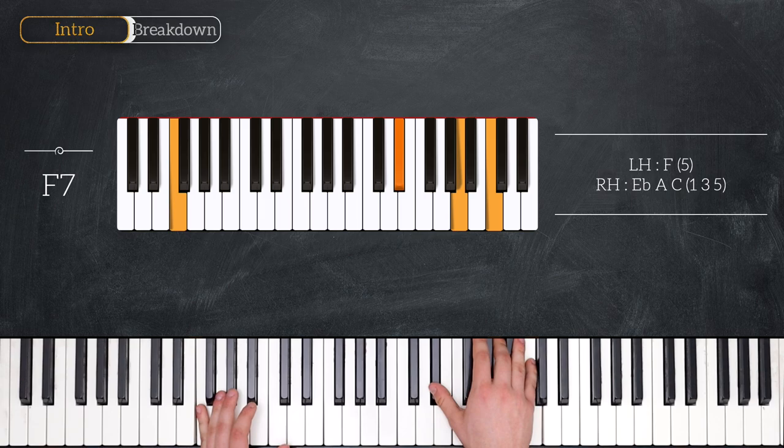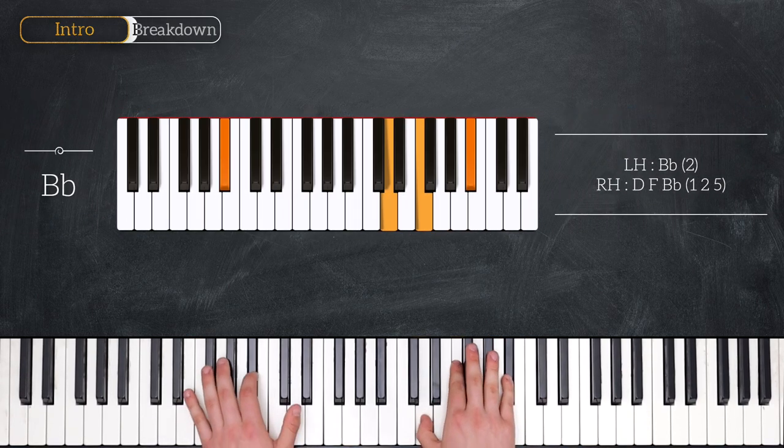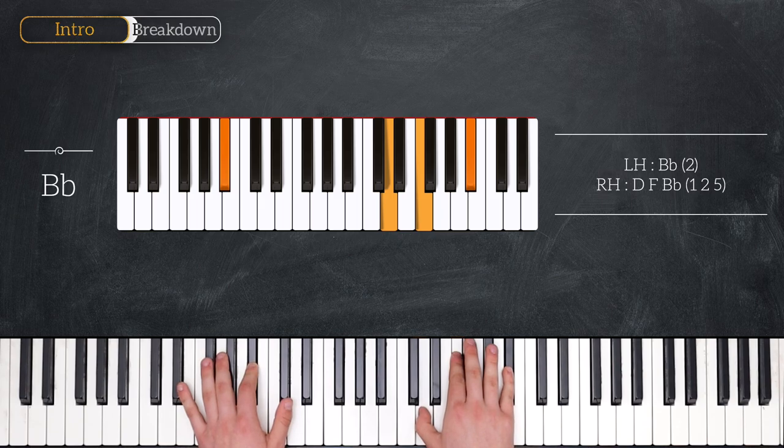Then we have F7. F in the left hand. Eb, A, and C in the right. And finally, we move to a Bb. Bb in the left hand. D, F, and Bb in the right.